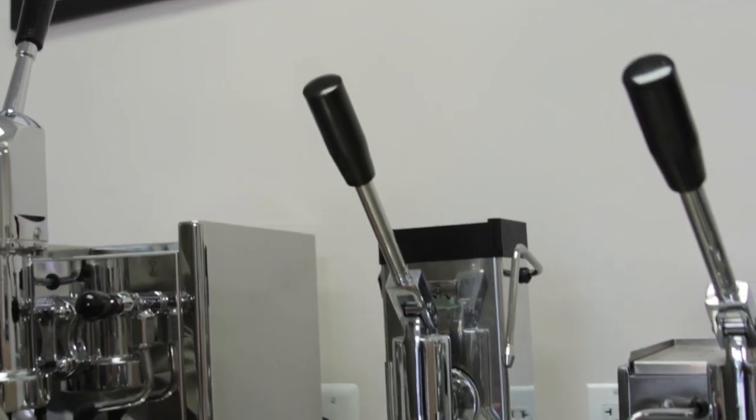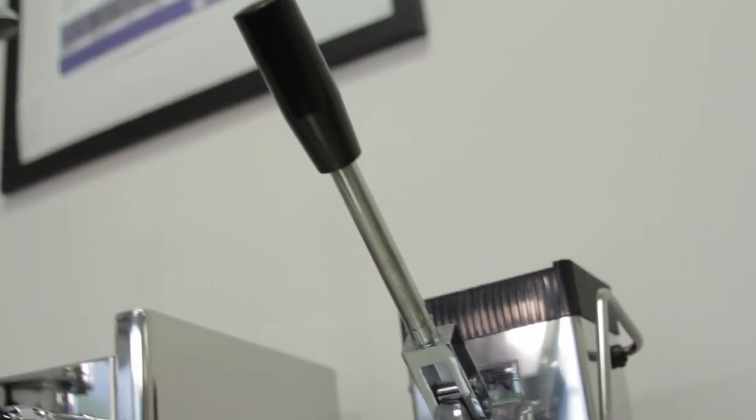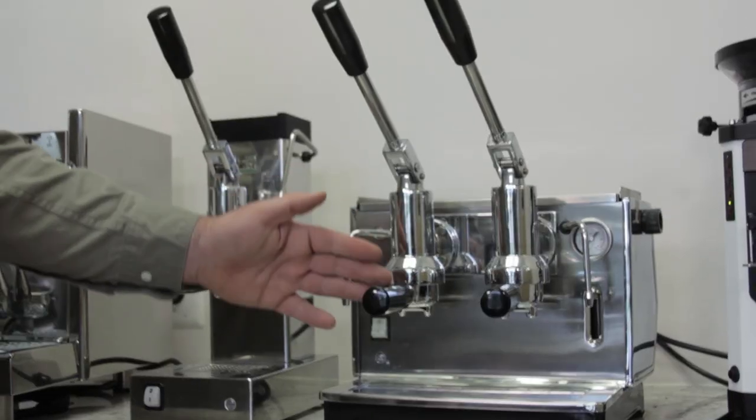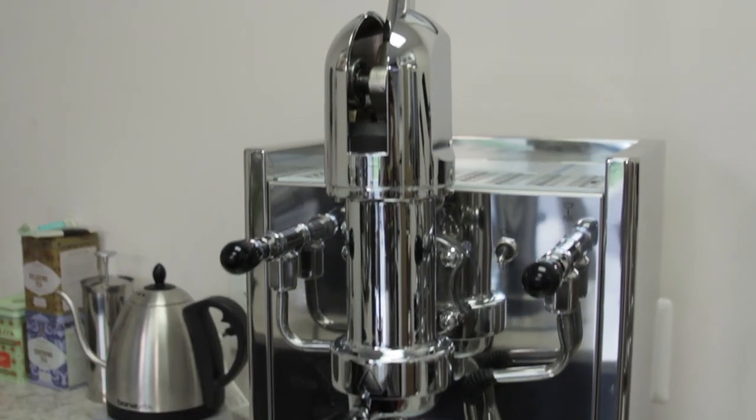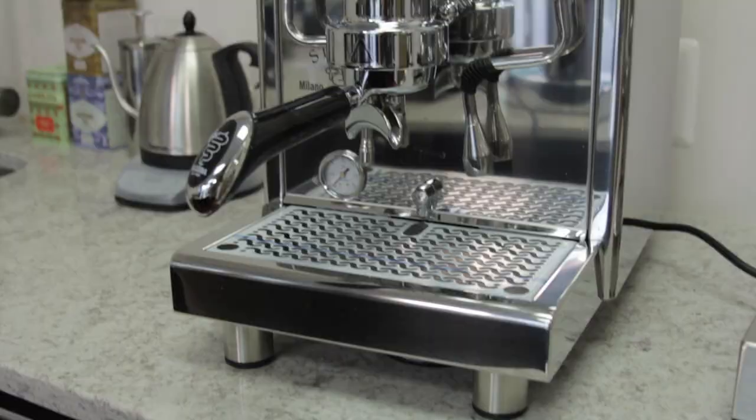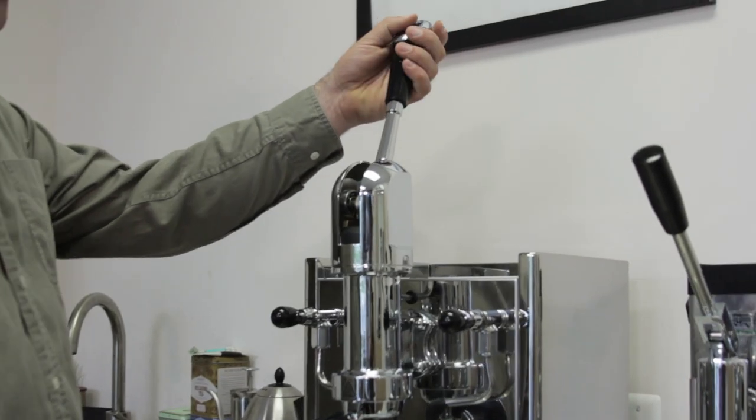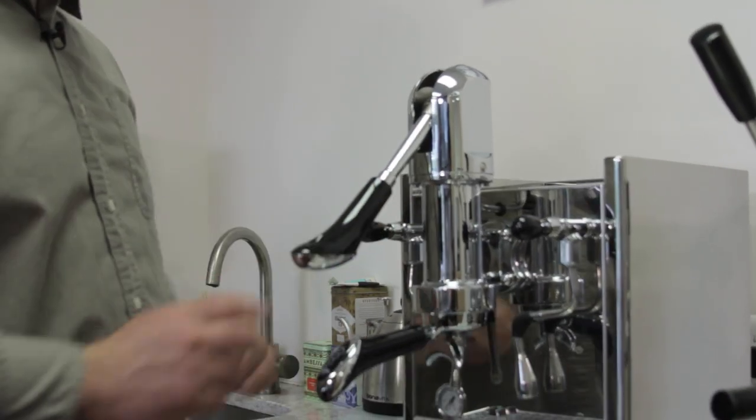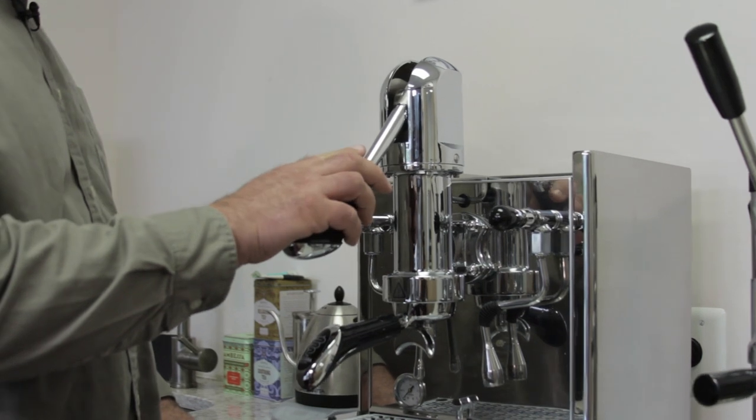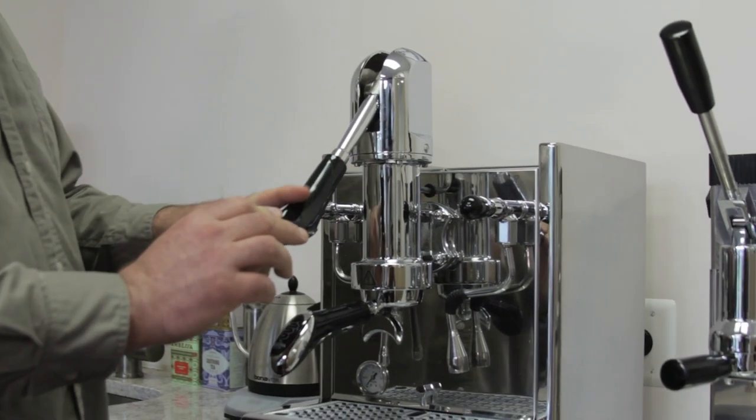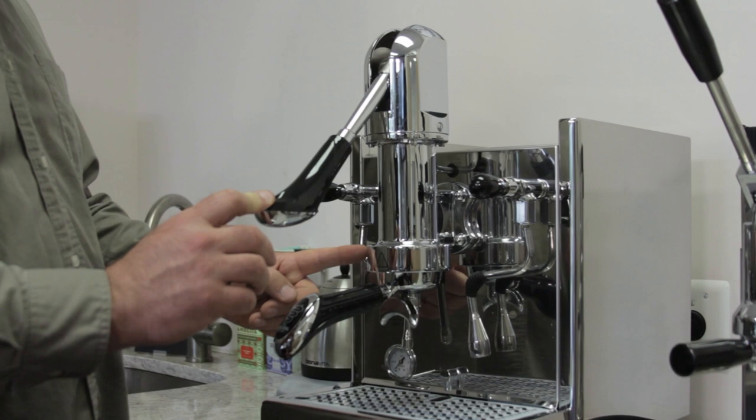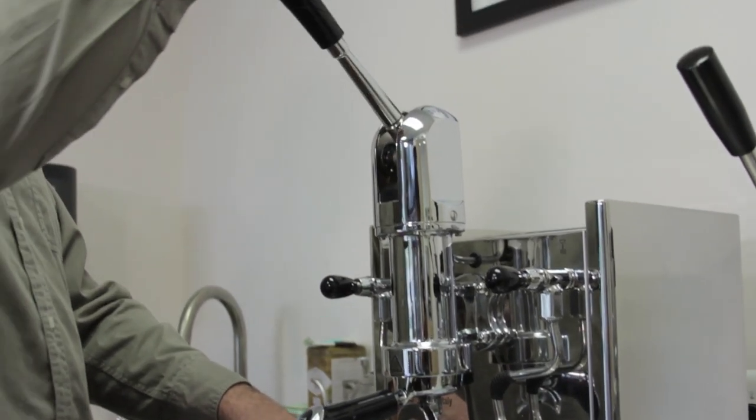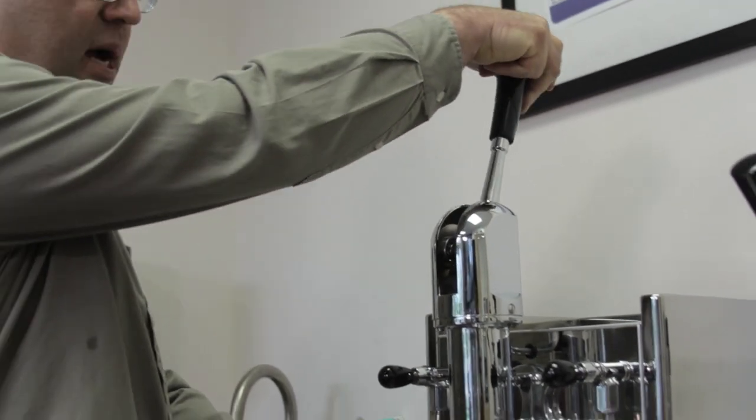Other models that are spring lever piston are the Ponte Vecchio Export, Ponte Vecchio Lusso, one and two group, as well as the Bezzera Strega. The Bezzera Strega is actually a spring piston lever machine, but it actually has a pump inside the machine. When you bring the lever down into the down position, it actually locks and engages the pump for pre-infusion. The pump engages and pumps water through the coffee grind, and then you release the lever, and then the lever pushes the piston downwards to extract the espresso.